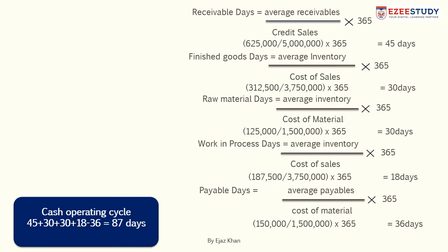The reason every business calculates its cash operating cycle is that it would like to manage it to a level that is not more than the industry average. If the cash operating cycle is too long, the business will have to spend more on finance costs because it needs to arrange for cash, potentially through short-term or long-term borrowing to cover that period. So it is very important for a business to manage its cash operating cycle effectively.